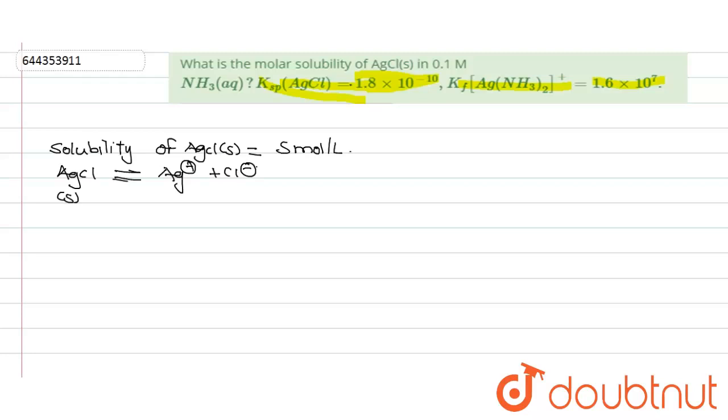In aqueous medium, the amount of silver will be S minus X molar and the amount of chlorine will be S molar.